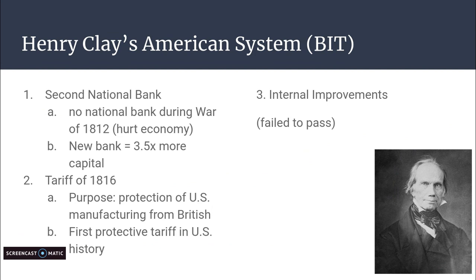The second aspect of the American System is internal improvements — the building of new roads, canals, and bridges within the United States. This failed. This is the only part of his system that never came to be.